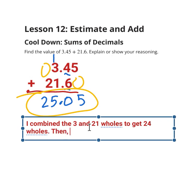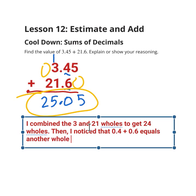Then I noticed that 4 tenths plus 6 tenths equals another whole. The 0.05 to represent 5 hundredths.